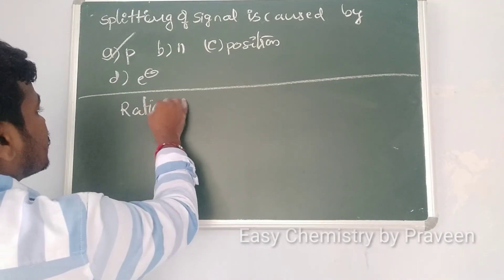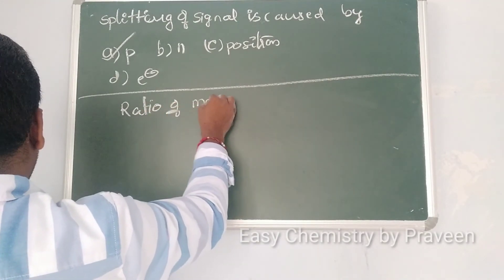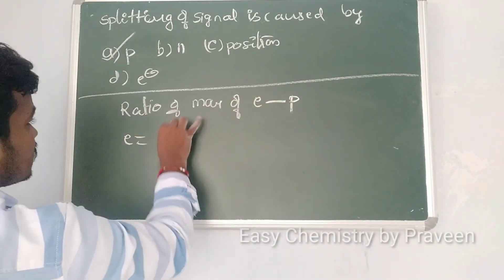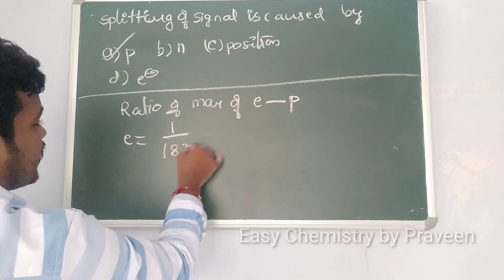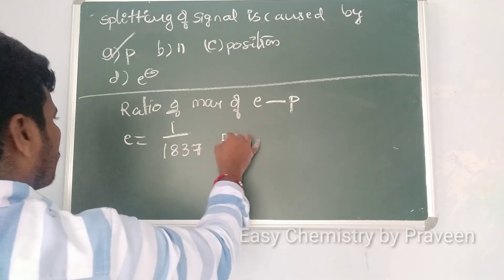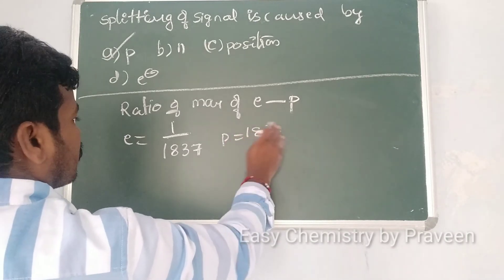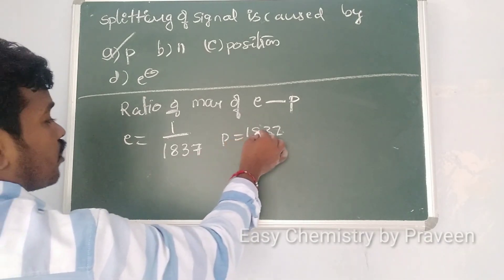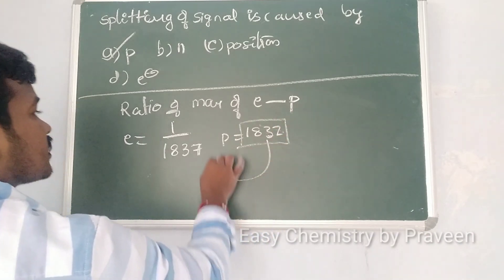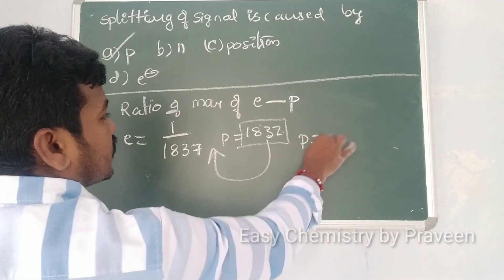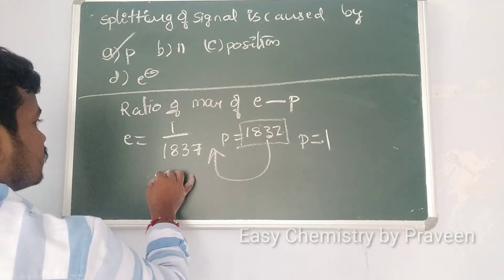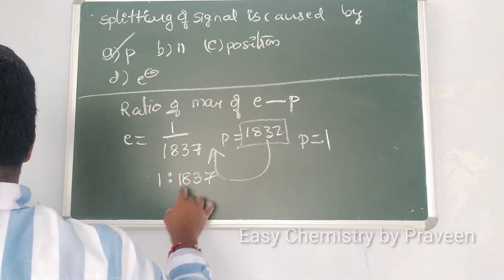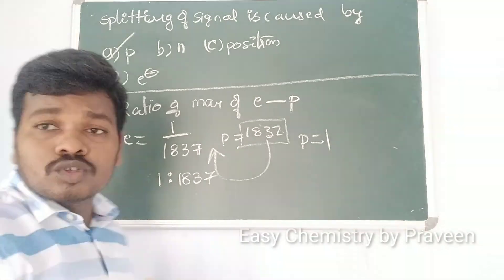The ratio of mass of electron to proton: the electron is a light particle. The proton is 1837 times heavier than the electron. So the mass ratio of electron to proton is 1:1837.